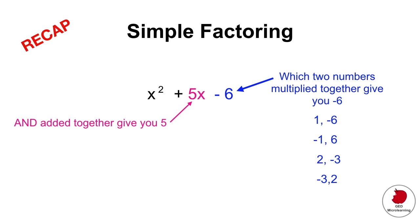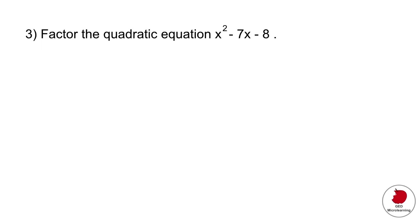Step two: those two numbers have to add up to 5. Looking at the list, minus 1 plus 6 gives you 5 — so for that example, that's the factored solution. Now applying this to our actual problem: we look for numbers that multiply to minus 8, giving pairs: 1 times minus 8, minus 1 times 8, 2 times minus 4, and minus 4 times 2.